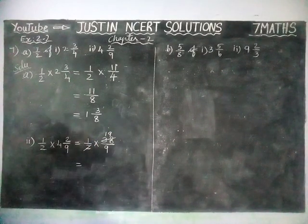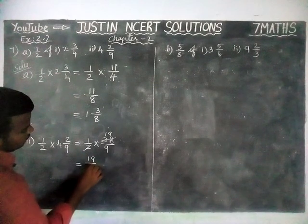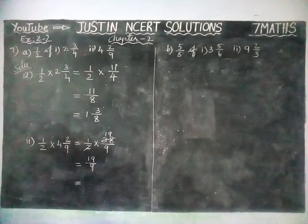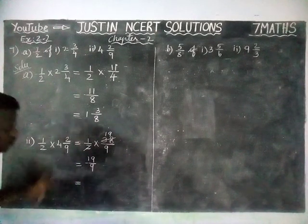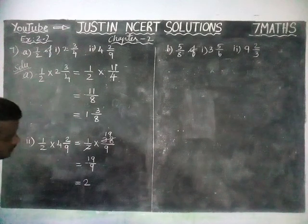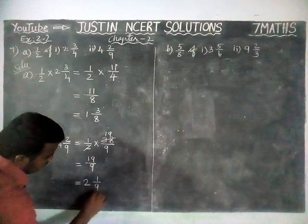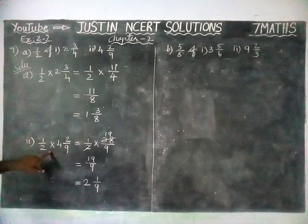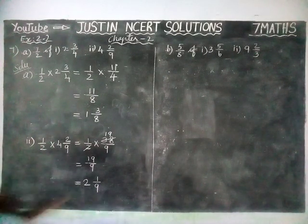In 18, nine 2's are 18. So 19 divided by 9 is equal to — now this is an improper fraction, we have to convert it into a mixed fraction. In 19, we have two 9's: two 9's are 18, remainder 1. So the answer is 2 and 1/9. Therefore, 1/2 of 4 2/9 is equal to 2 1/9.